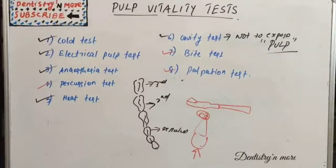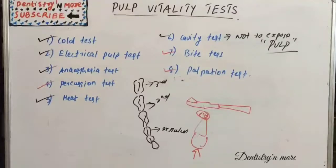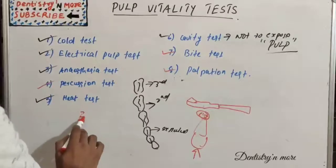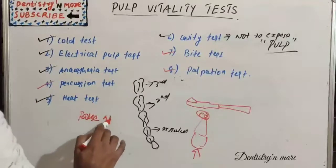Regarding reliability, pulp tests can be helpful tools during the diagnostic phase, but a single pulp test with a negative result is not very reliable. Dentists therefore prefer a combination of tests. Sometimes pulp tests tell you the tooth is non-vital while in reality it is vital — this is called a false negative result.